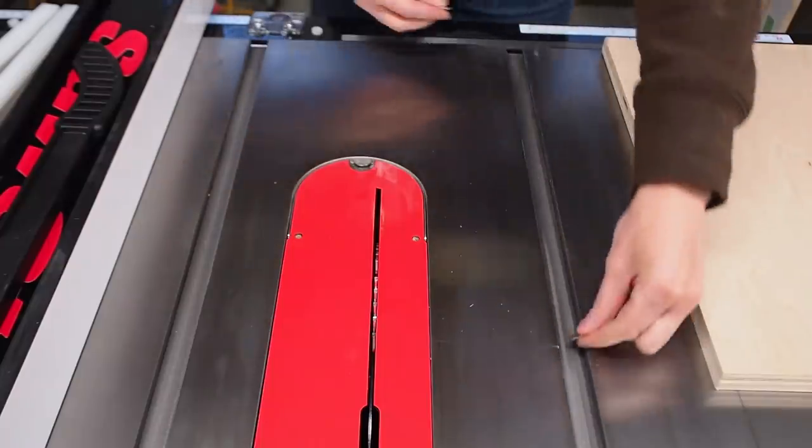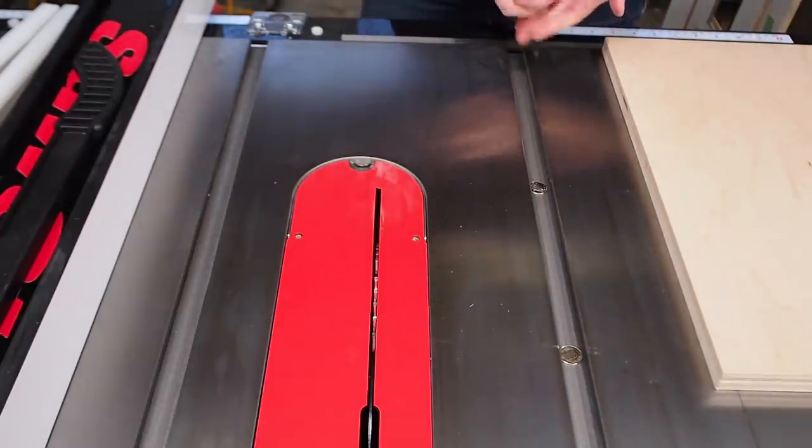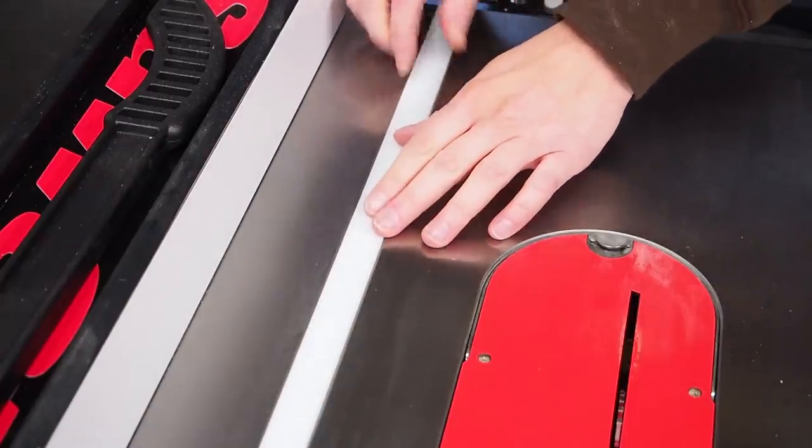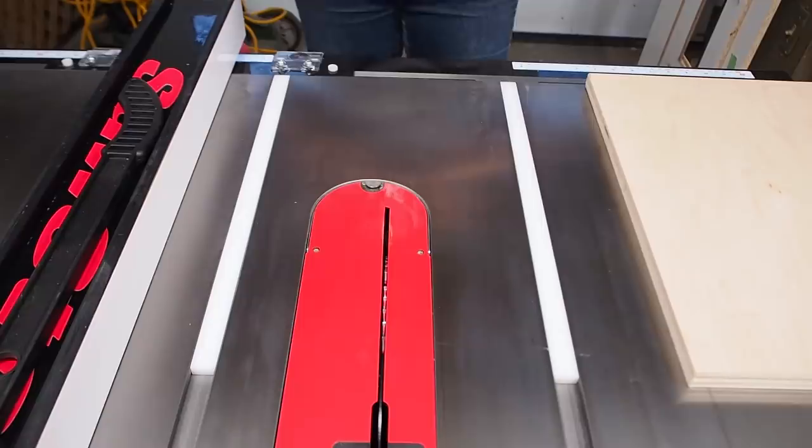I only needed one of these runners that I cut in half. I then used a few dimes in each miter slot to raise up the runners and applied a few drops of crazy glue before dropping the board into place and applied pressure for a couple minutes.